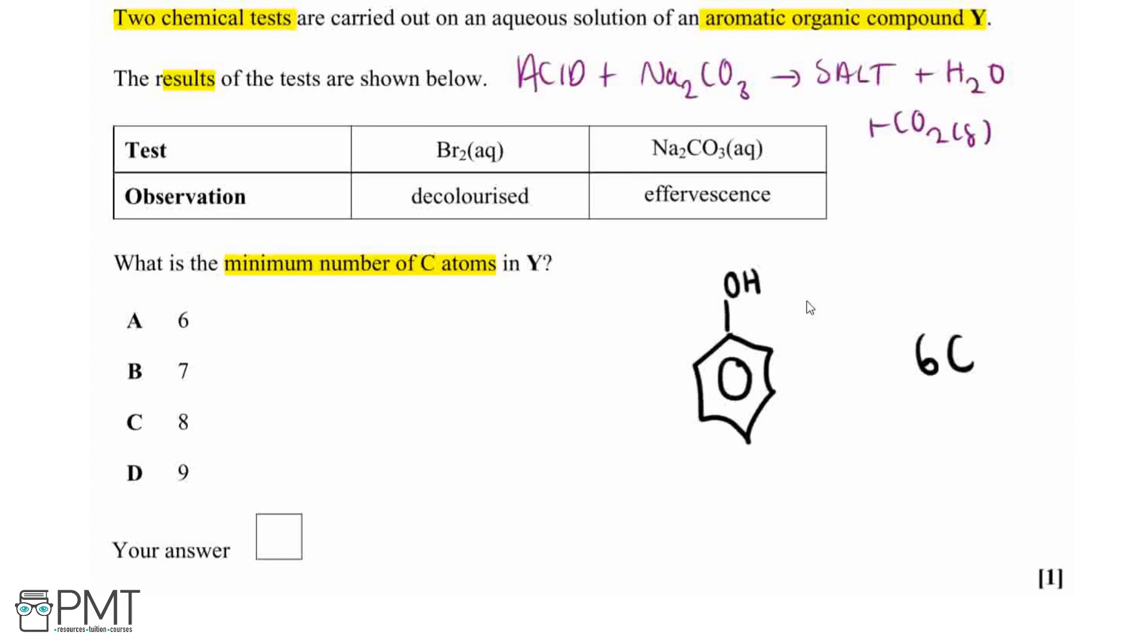Now the phenol here is only weakly acidic, so whilst it can react with sodium hydroxide, it can't react with sodium carbonate because it's not acidic enough. Therefore, in order to react with that sodium carbonate, there must be some sort of organic acid on this benzene ring.